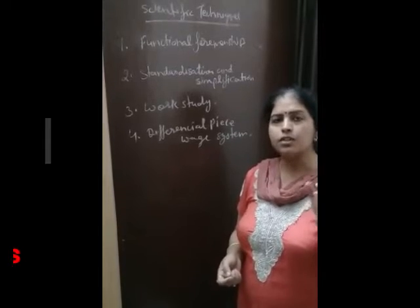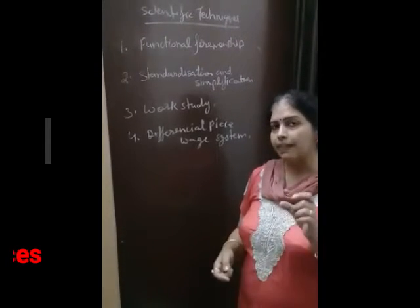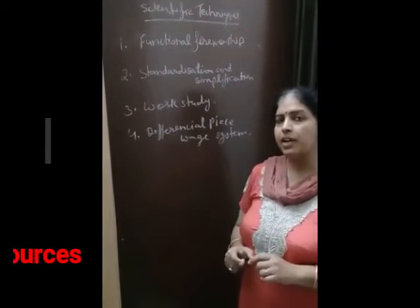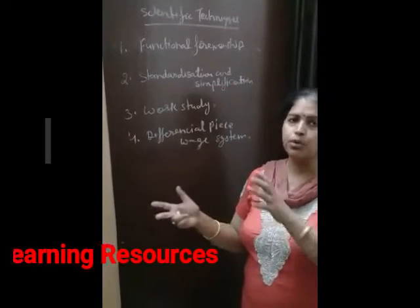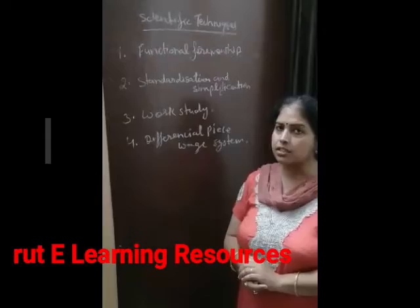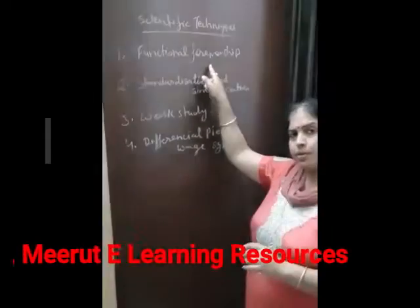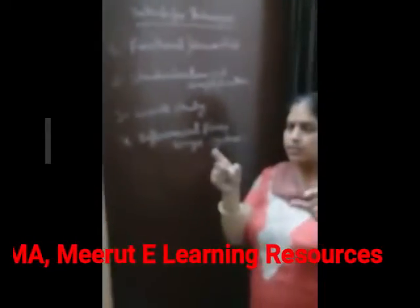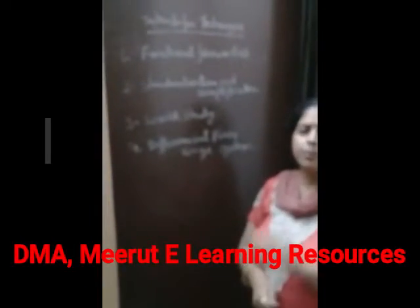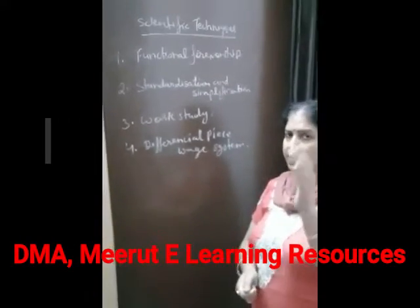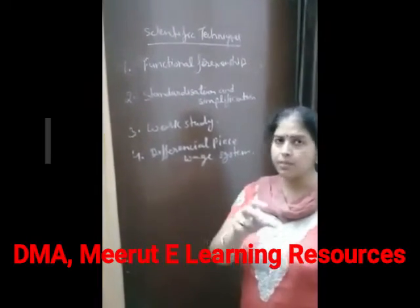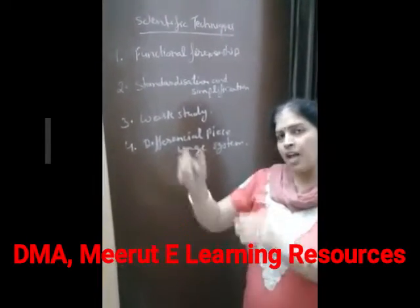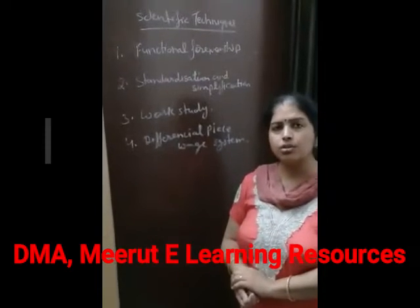Henry Fayol's first principle, division of work, means the main task should be divided into unit tasks, which will improve specialization in every task. Functional foremanship defines that a factory manager is divided into two roles: a production manager and a planning manager. The production manager has four foremen under him, each a specialist in their own field.